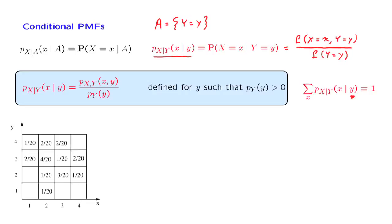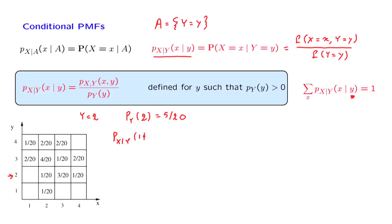Let us look at an example. Consider the joint PMF given in this table. Let us condition on the event that Y is equal to 2, which corresponds to this row in the diagram. We need to know the value of the marginal at this point, so we start by calculating the probability of Y at value 2. This is found by adding the entries in this row of the table, and we find that this is 5 over 20. Then we can start calculating entries of the conditional PMF. For example, the probability that X takes on the value 1 given that Y takes the value 2 is this entry, 1 over 20, divided by 5 over 20, which gives us 0.